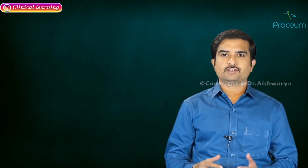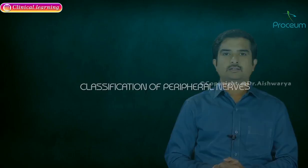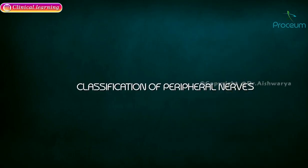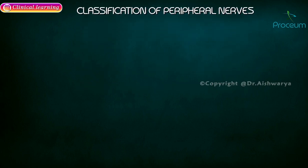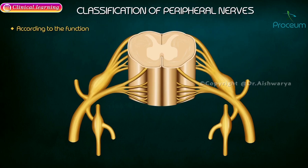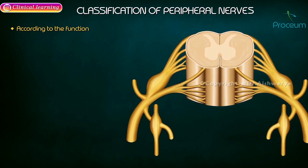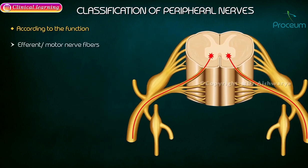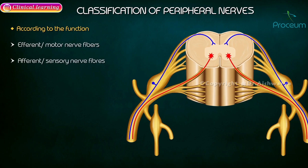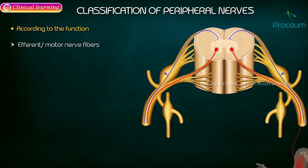The topic of discussion for today is the classification of the peripheral nerves according to the function performed. These peripheral nerves are classified under two headings: efferent (motor) and afferent (sensory).